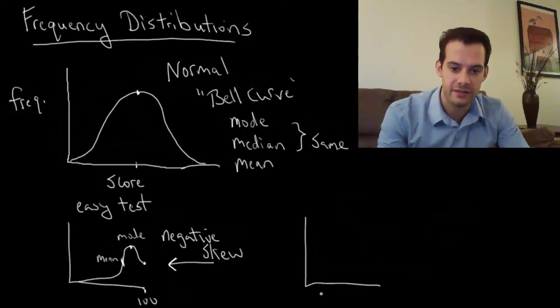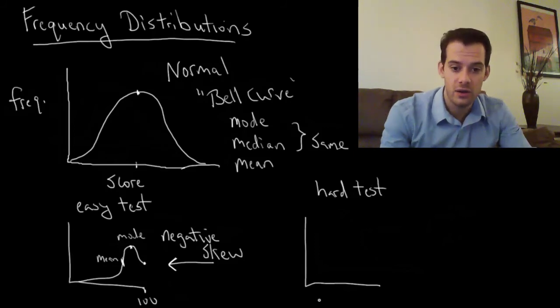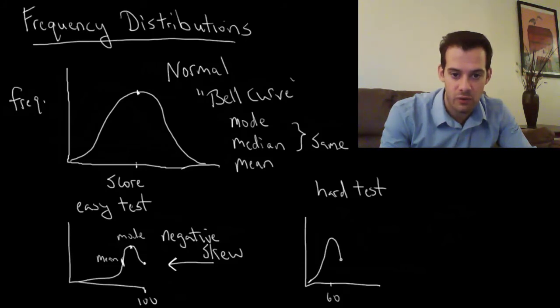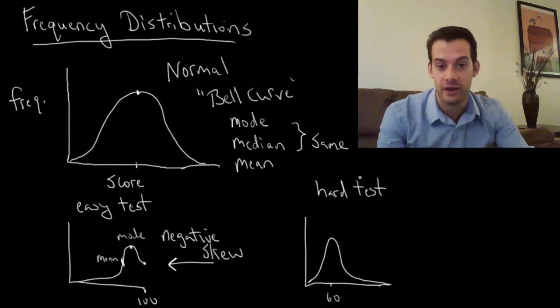On the other hand, we might take a test that's the hard test. And what happens when we have a really hard test? Well, let's say here is 60. Let's say lots of students got a 60 on this test. So some students scored below that, but most students got a 60 on this test or somewhere close to that. But a couple students were really well prepared and they got very high scores, 95, 100, something like that.